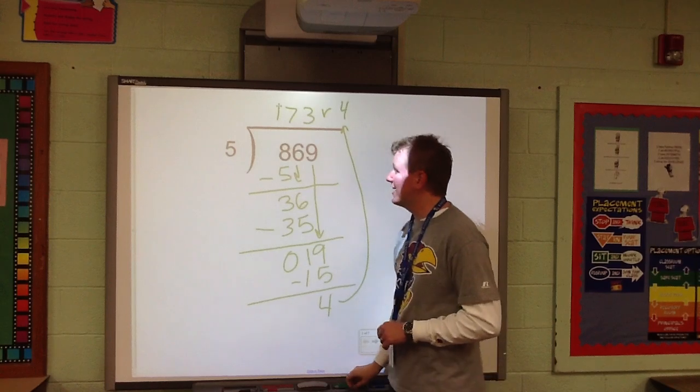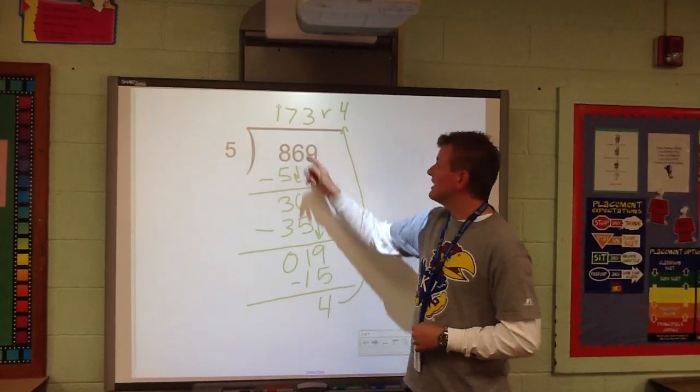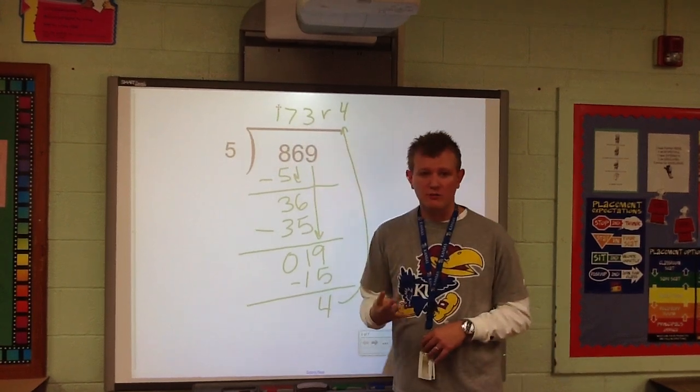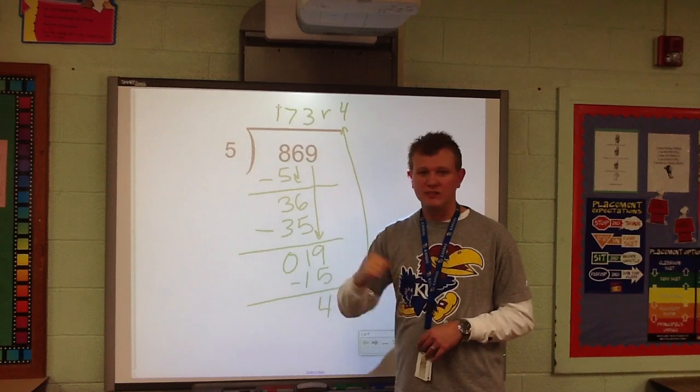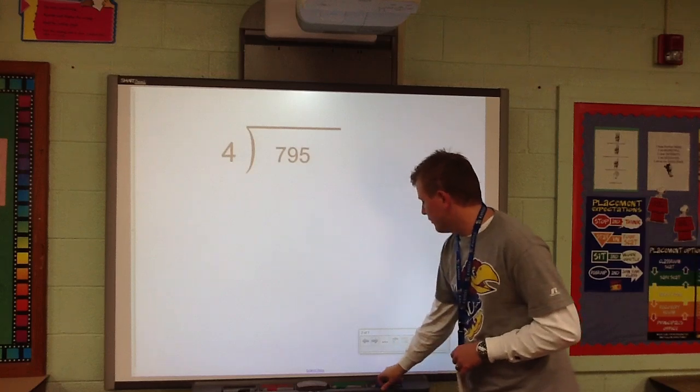So, if I had $869, I'm going to divide it up among 5 people. Each of us would get $173, and then we'd have $4 left. And we'd probably just arm wrestle over it. And I would win. Let's do another one.